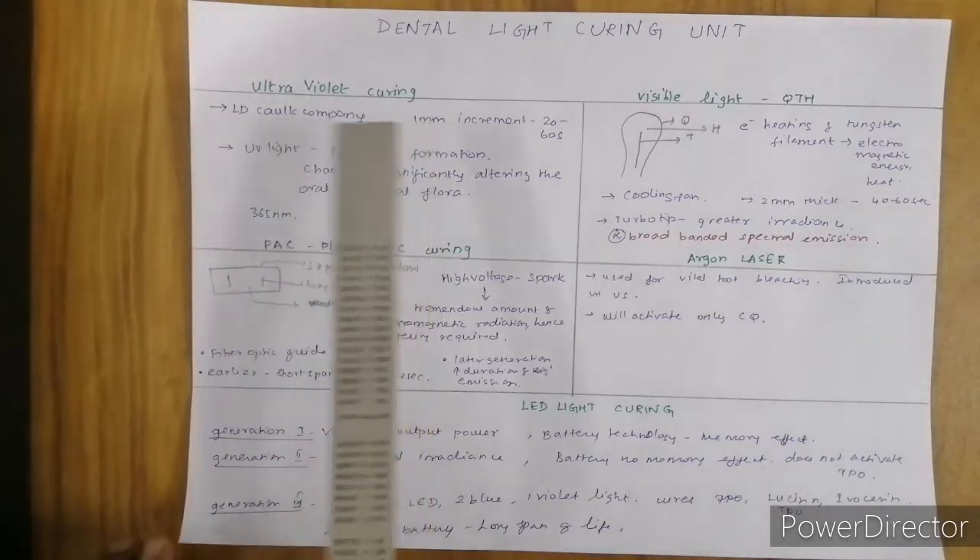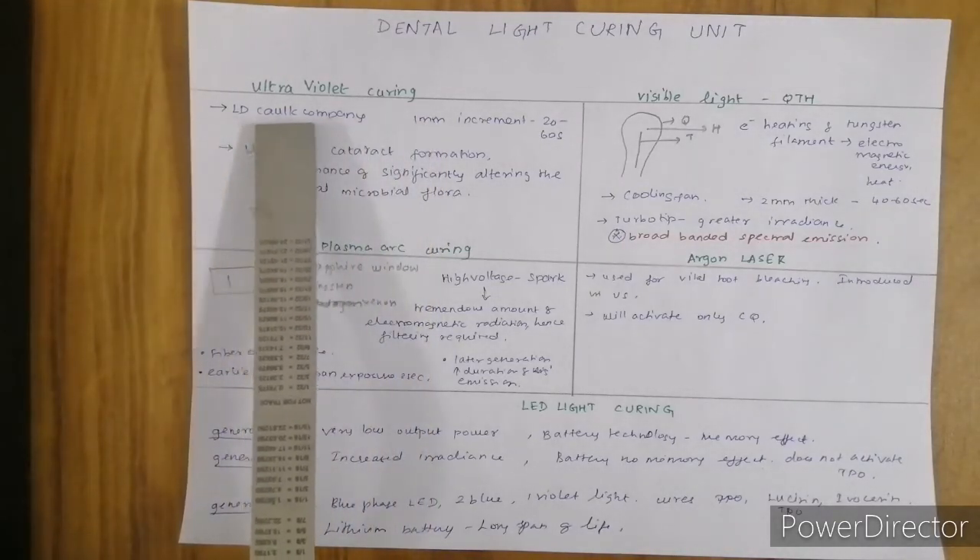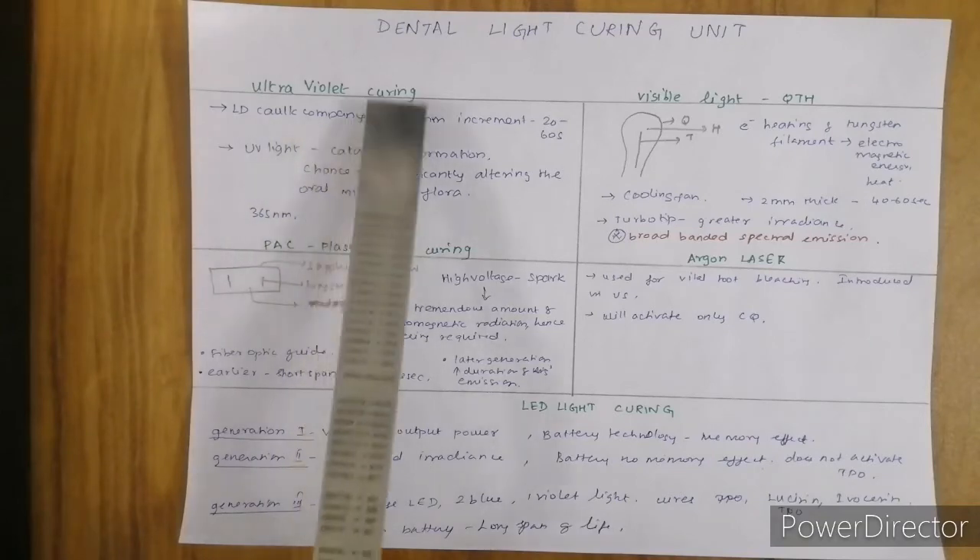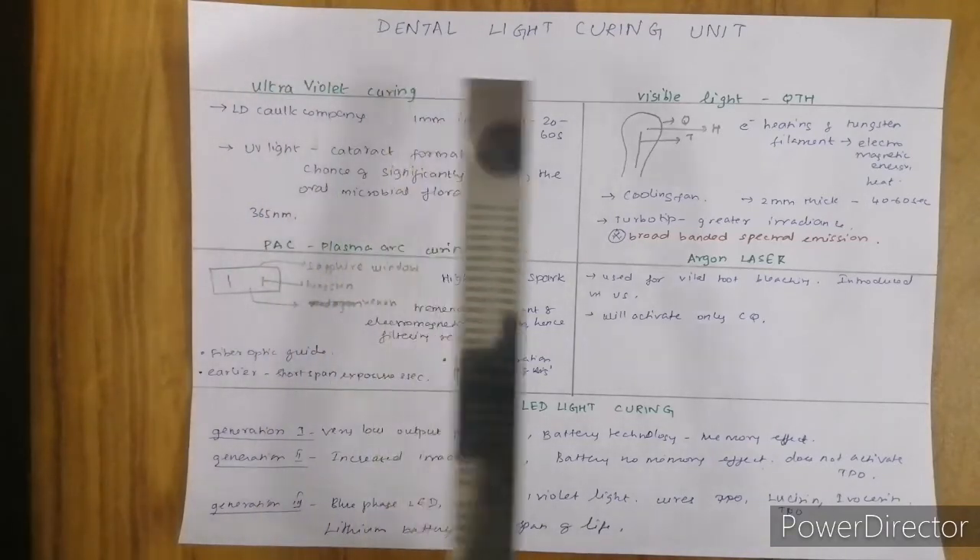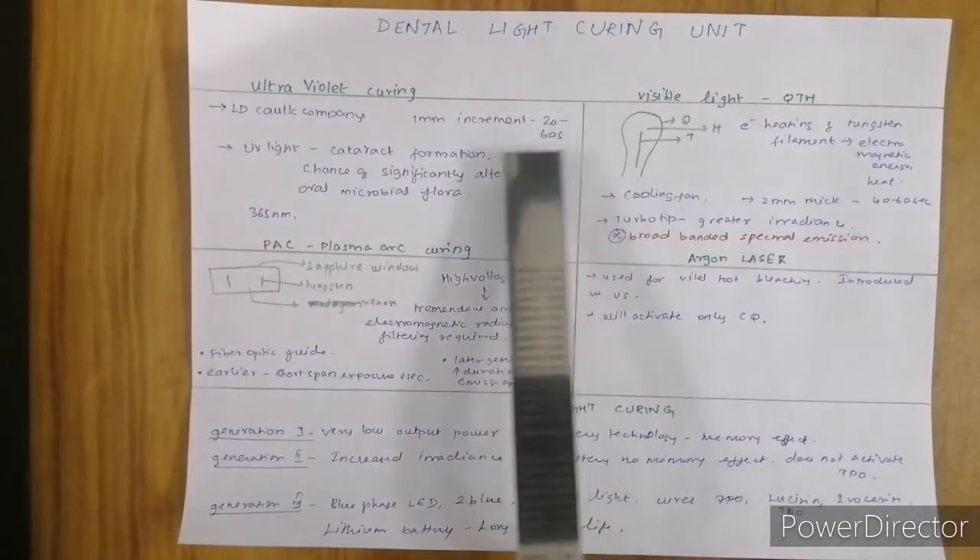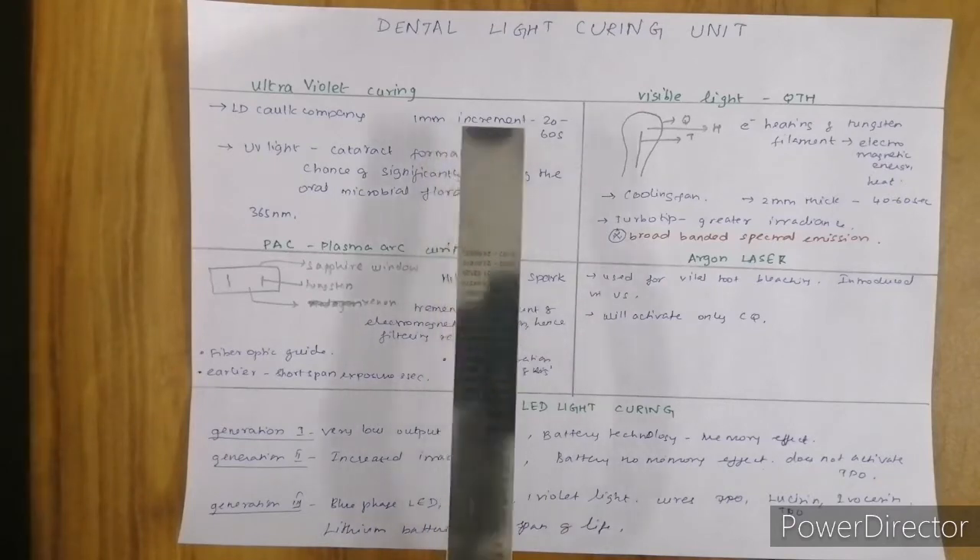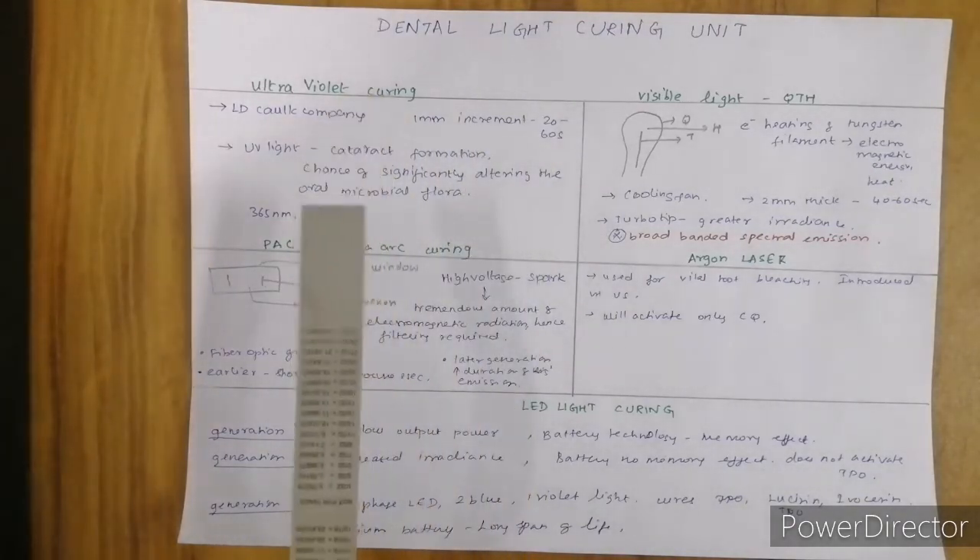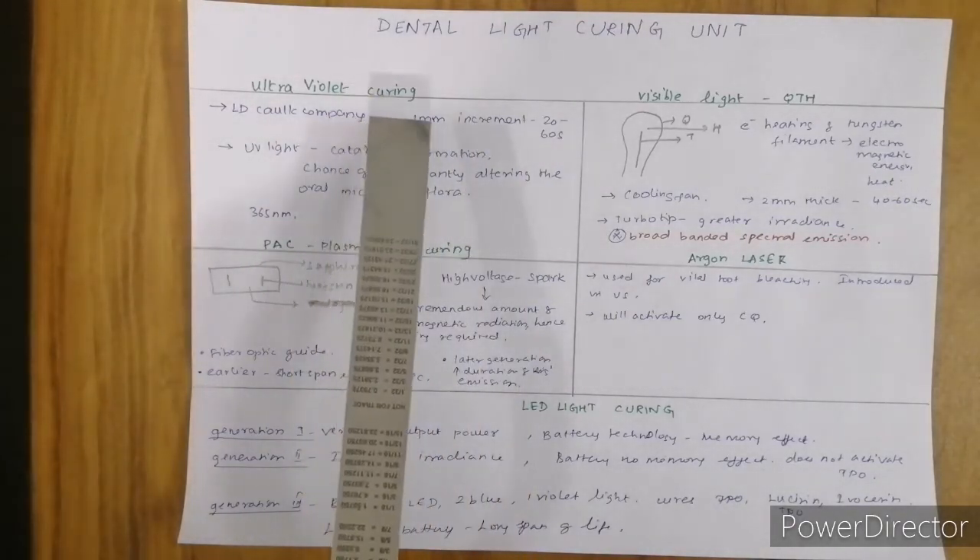Ultraviolet curing units were introduced in the dental market by LD Caulk Company. Ultraviolet curing light requires around 20 to 60 seconds to cure a 1mm increment of composite.